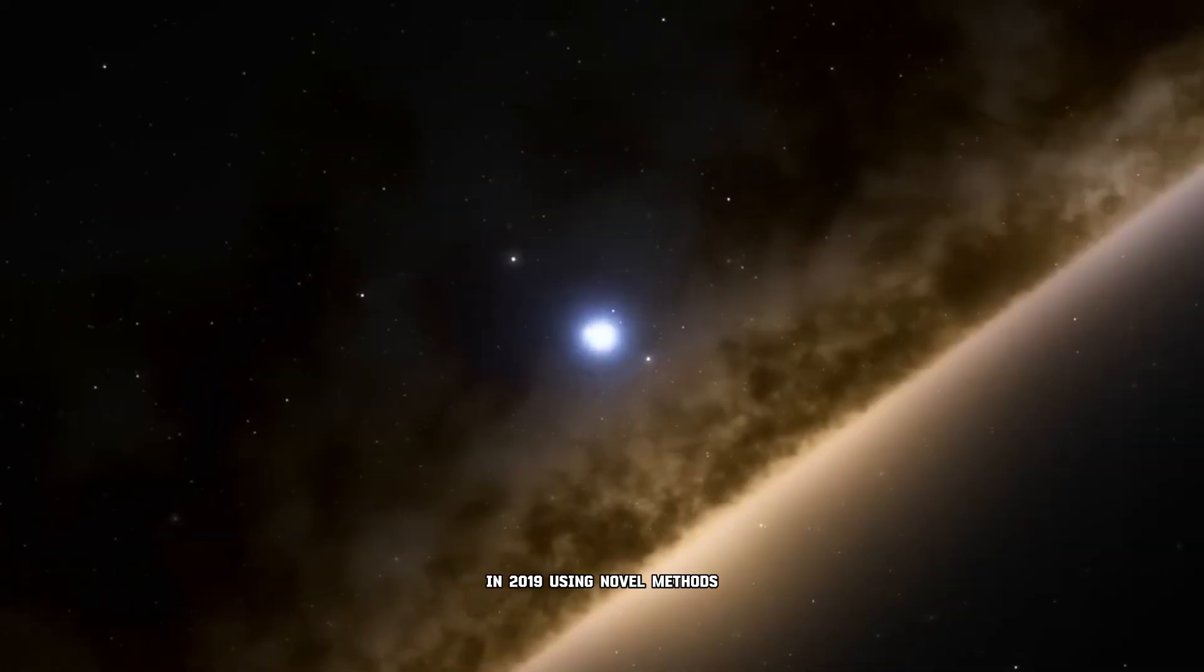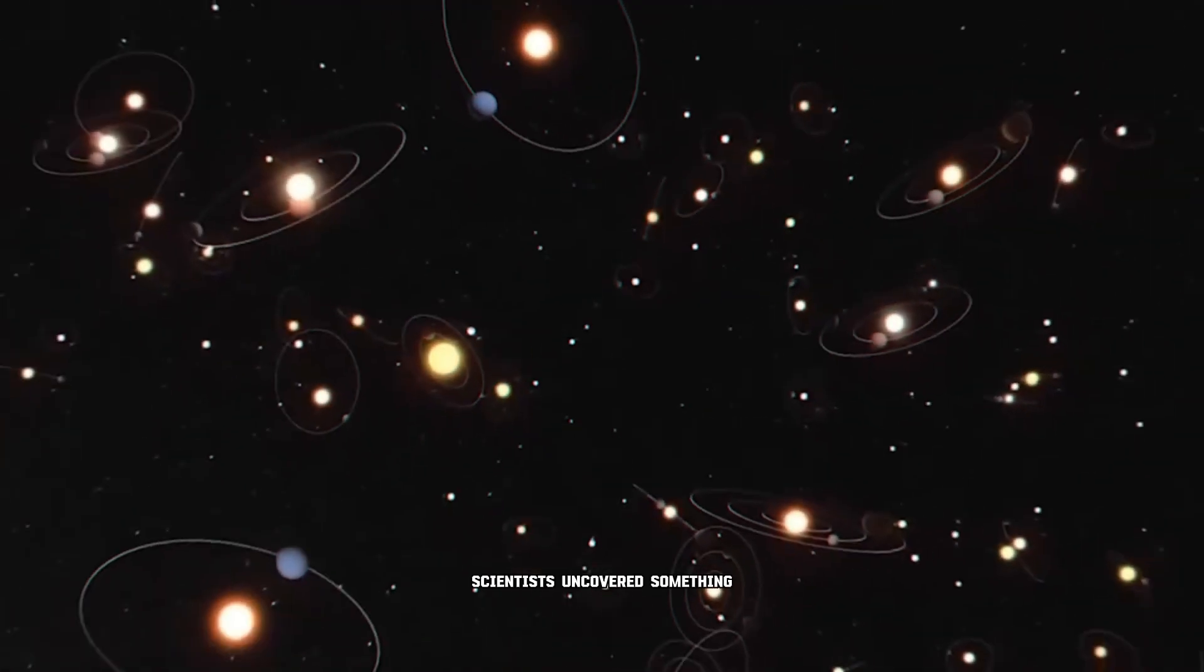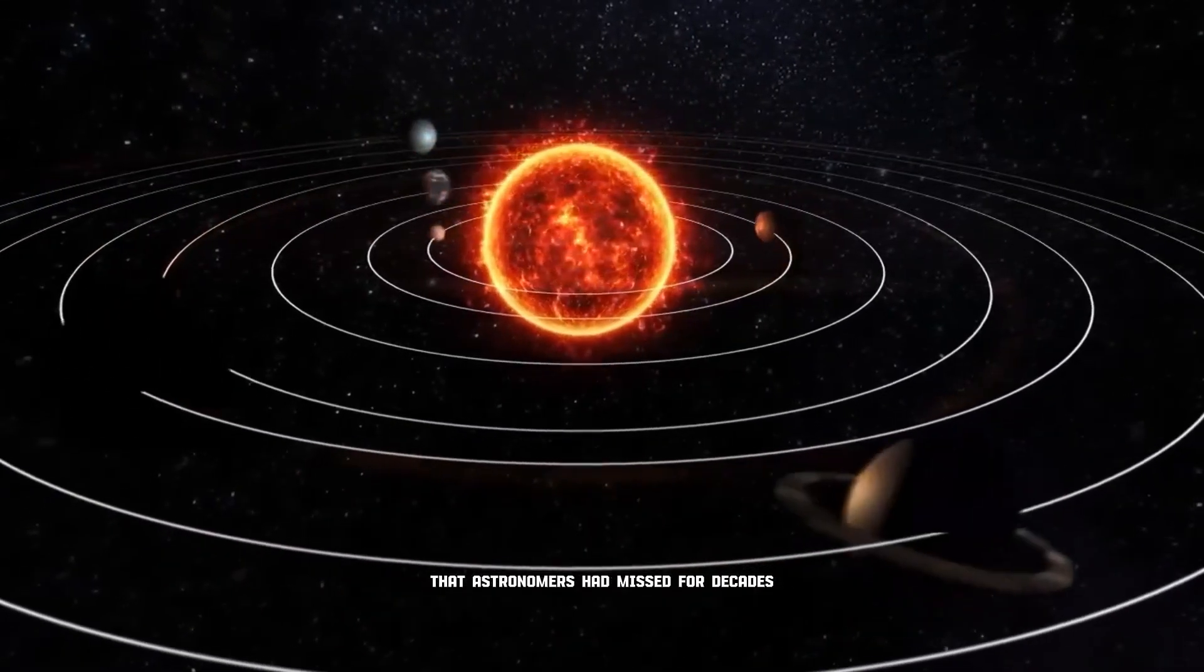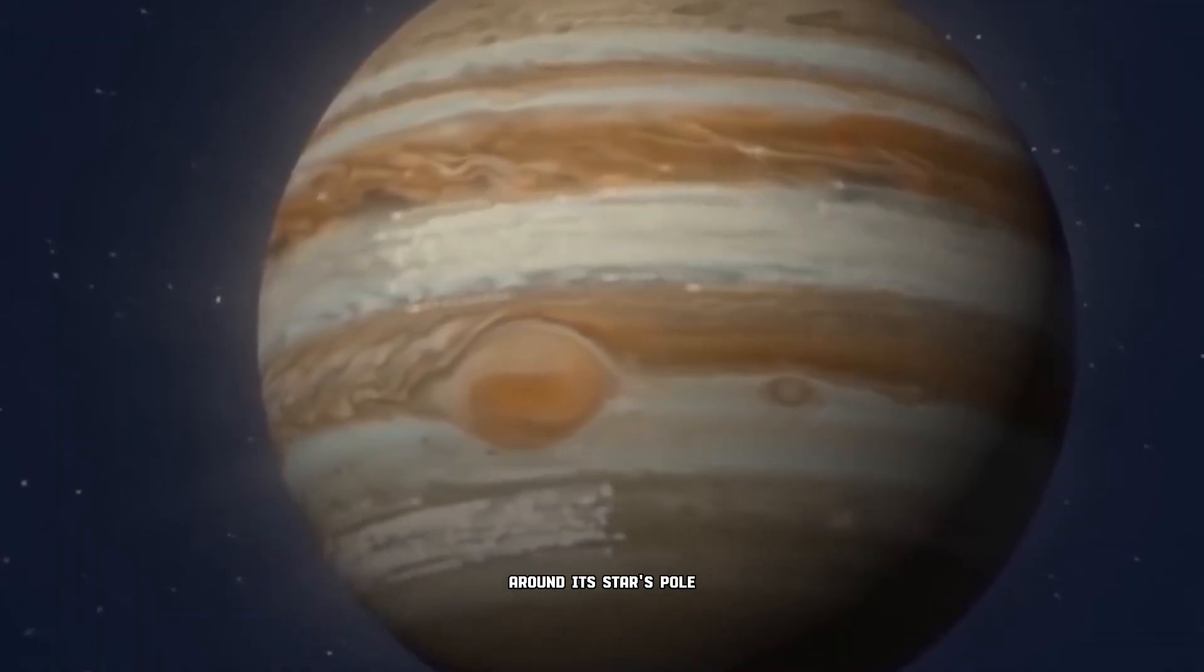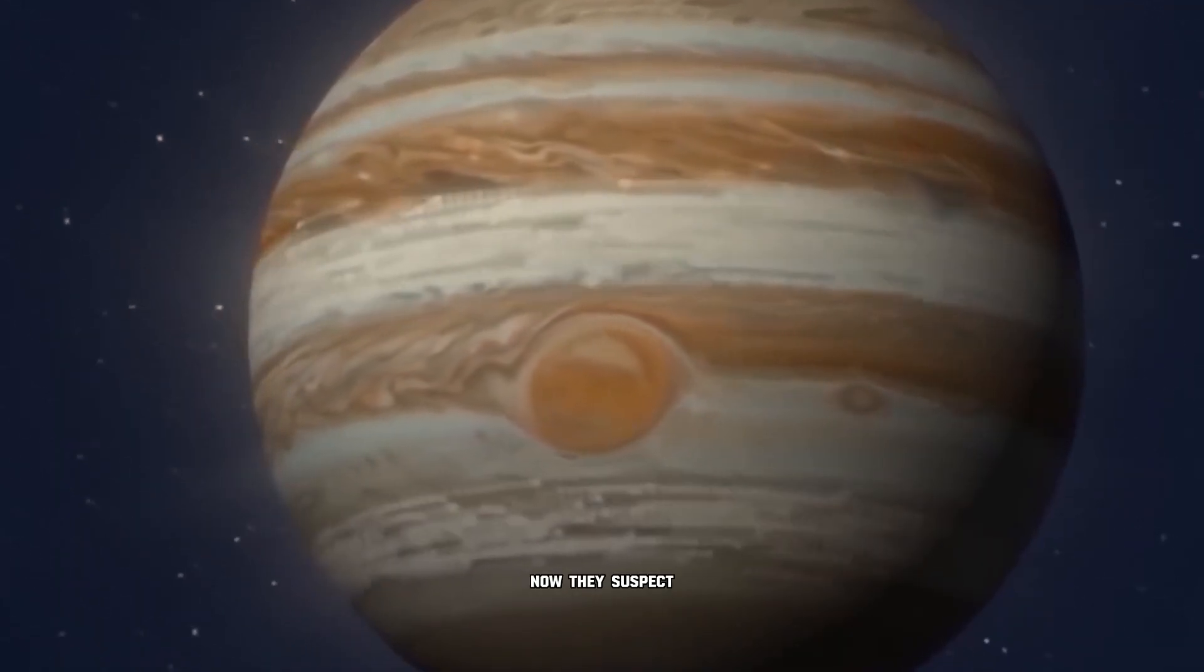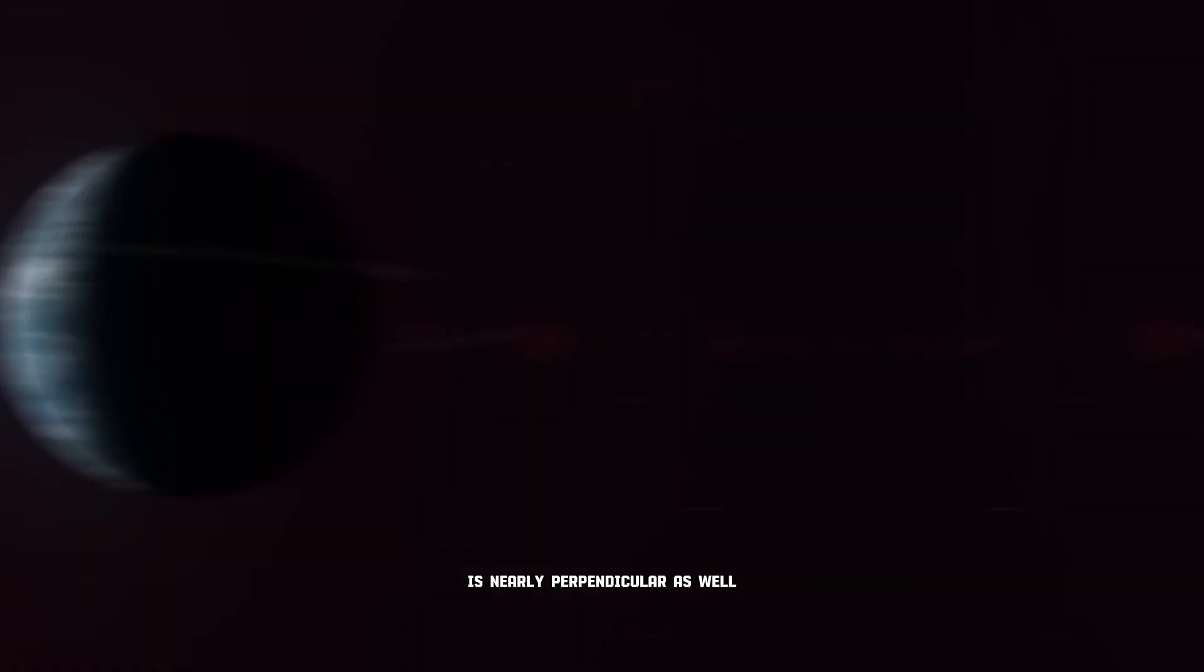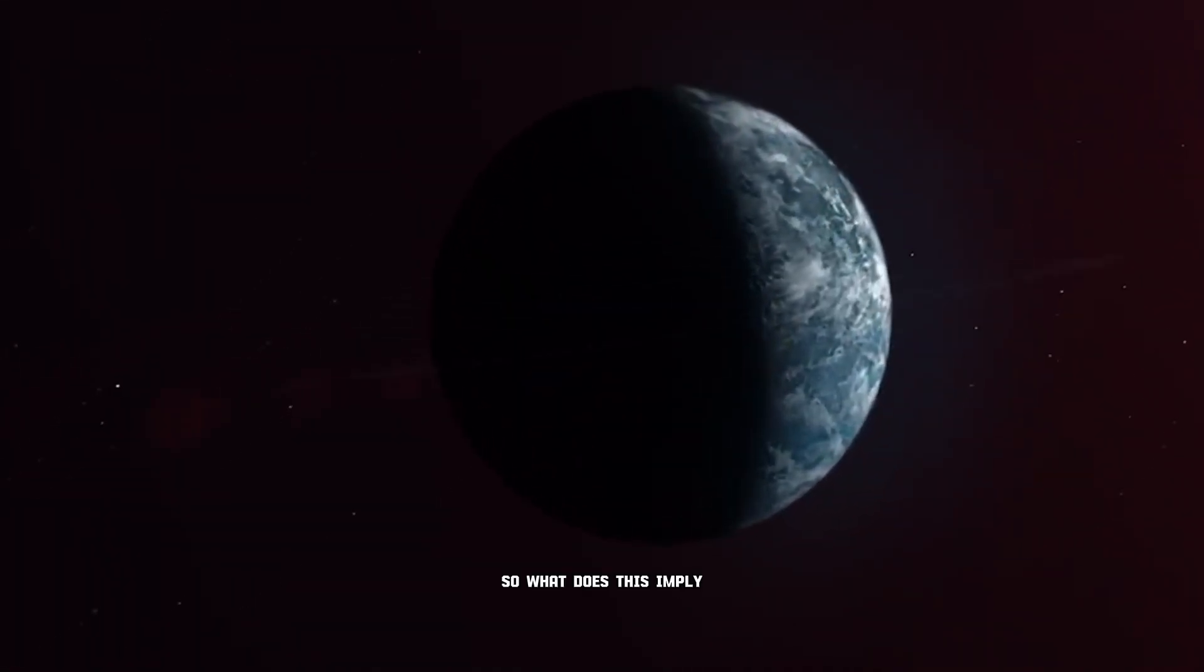In 2019, using novel methods, scientists uncovered something that astronomers had missed for decades. The furthest planet orbits perpendicularly around its star's pole, not the equator. Now they suspect the middle exoplanet is nearly perpendicular as well. So what does this imply?